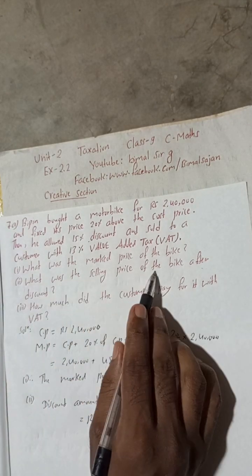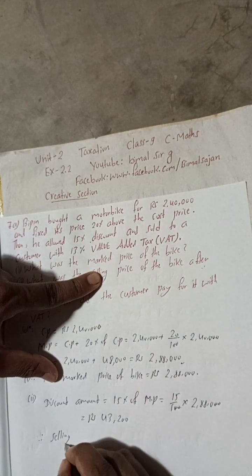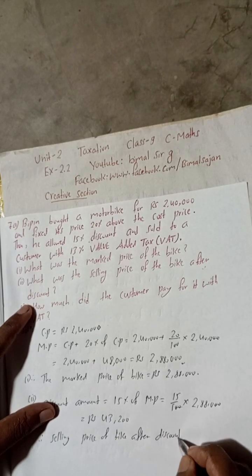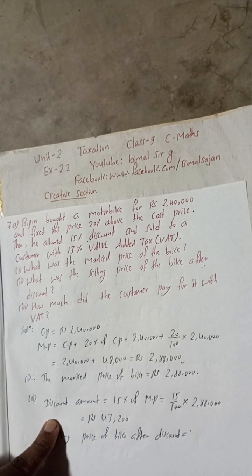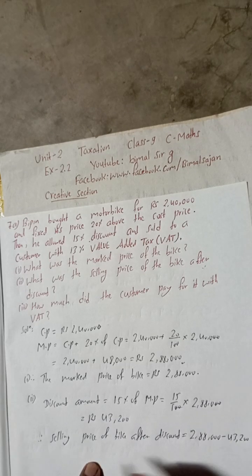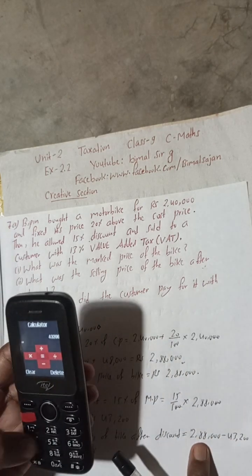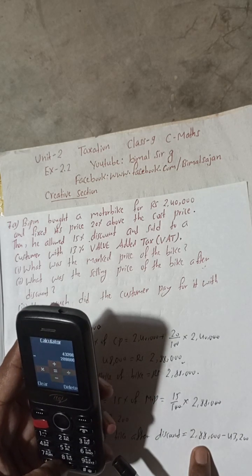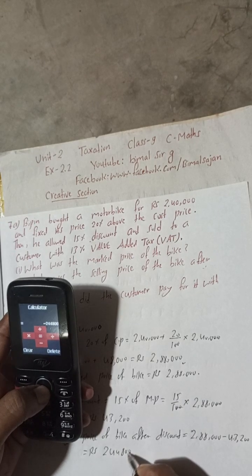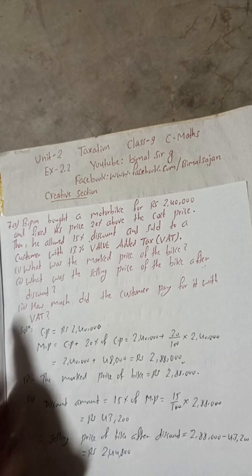We have the discount amount. Now the selling price of the bike after discount: SP equals marked price minus discount, which is 2,88,000 minus 43,200. That equals Rs 2,44,800. So the selling price of the bike after discount is Rs 2,44,800. That is our answer to number two.